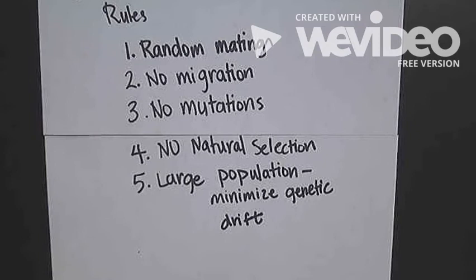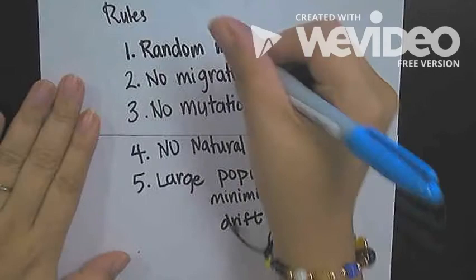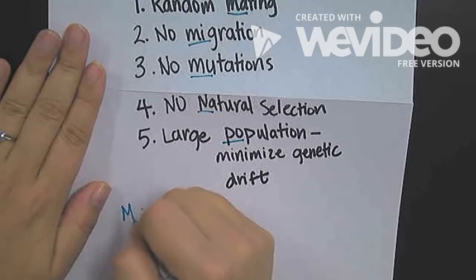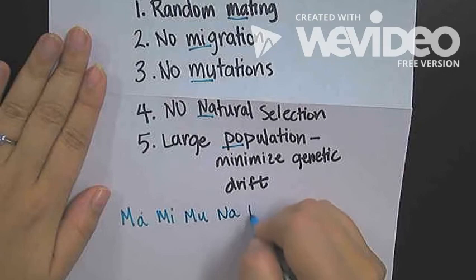A mnemonic device that a student came up with many years ago is looking at key phrases within each rule. She came up with this: Ma, me, mu, na, po. Ma, me, mu, na, po.